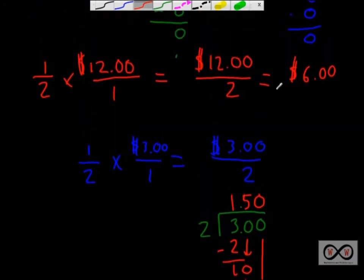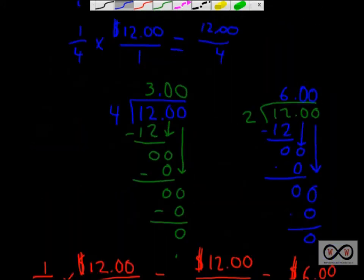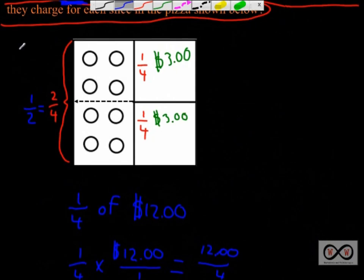The half pizza was six dollars — we proved that above. Now we add on the price of the topping, which is one dollar fifty cents. Zero plus zero is zero, zero plus five is five, six plus one is seven. So the large pepperoni half-pizza slice comes to seven dollars and fifty cents.